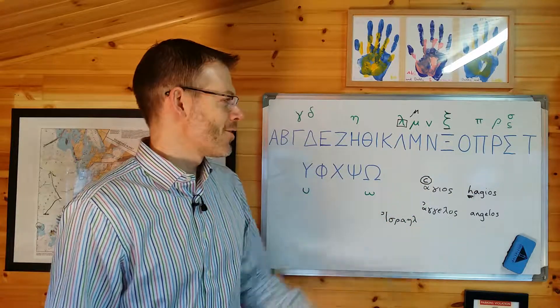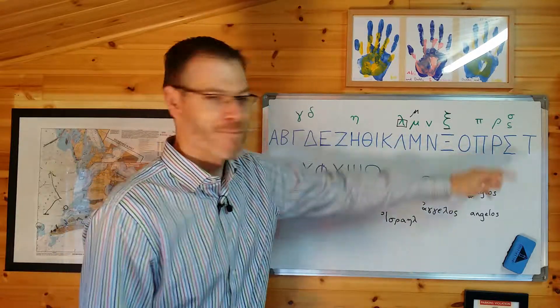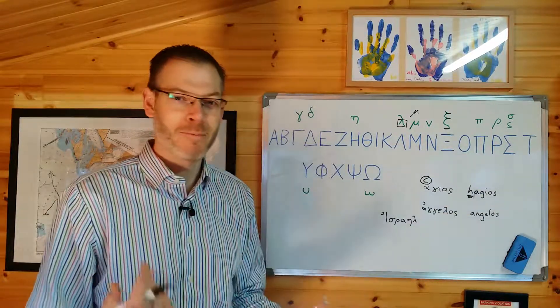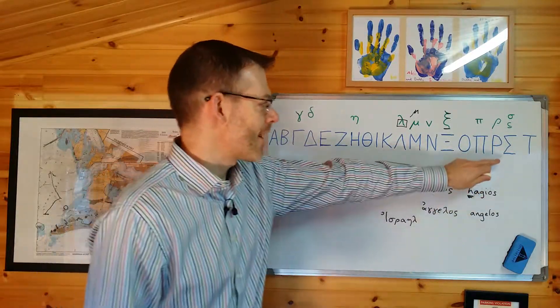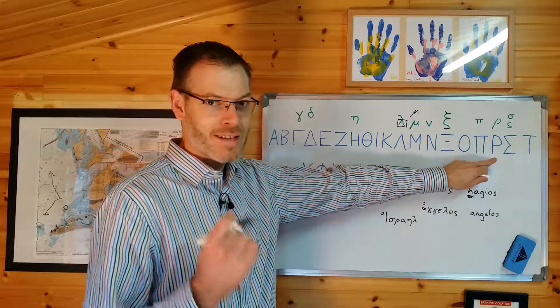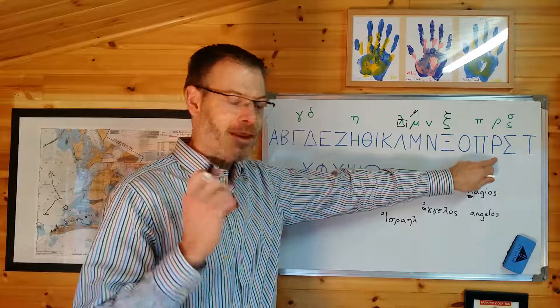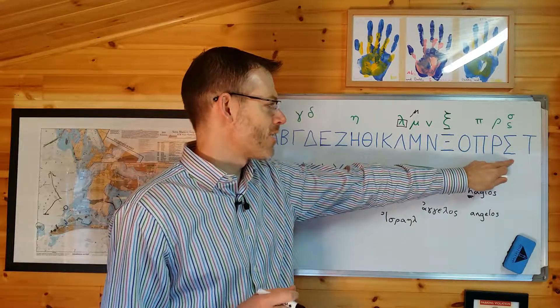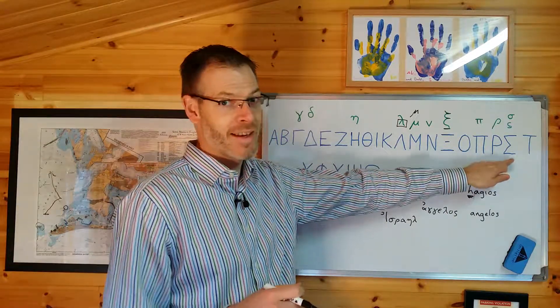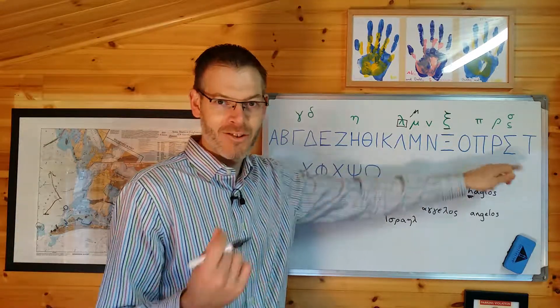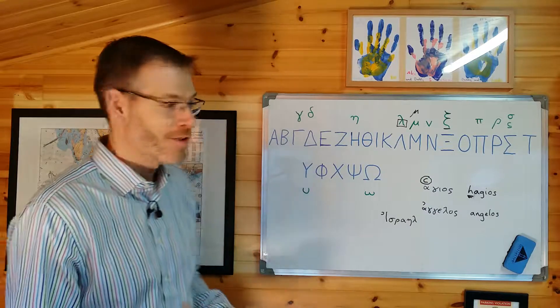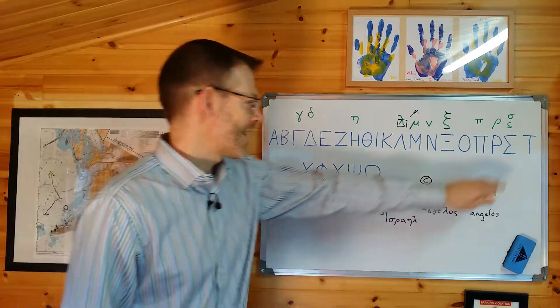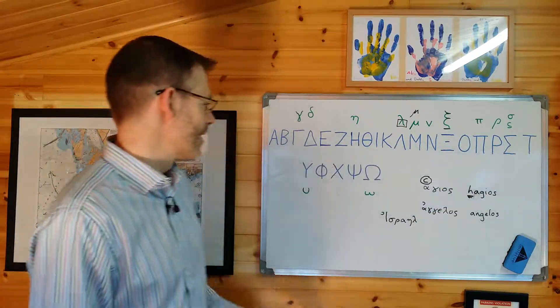The rho really confuses people because it looks like an English P when it's uppercase. If you go to Greece, you see this all the time and people pronounce it wrong. You just need to learn it and keep reminding yourself. Sigma looks nothing like anything at all unless you're a mathematician used to writing it — that one you've just got to learn.